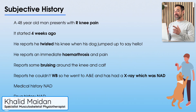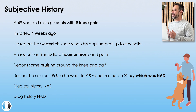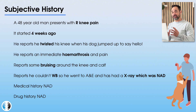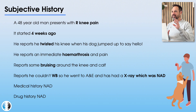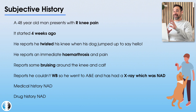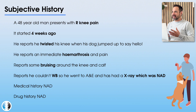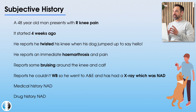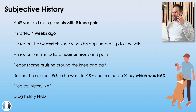Let's start by diving into the history of our patient. We have a 48-year-old male who presents to our clinic with right knee pain which started four weeks ago. It started because his dog jumped up to say hello to him, he was caught off guard and twisted his right knee. As soon as this happened he had an immediate haemarthrosis — significant swelling because there's blood in the area — with lots of pain at his knee.